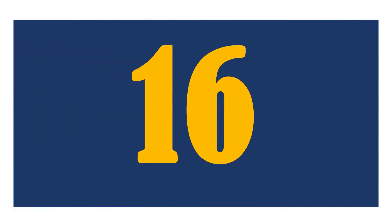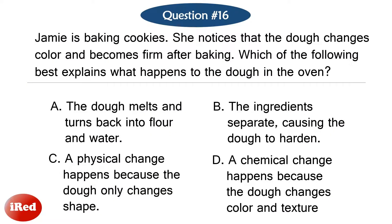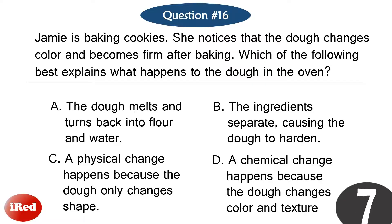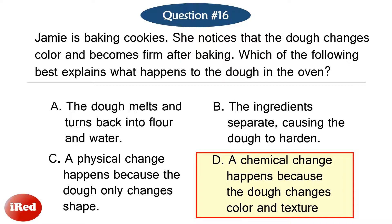Question number sixteen. Jamie is baking cookies. She notices that the dough changes color and becomes firm after baking. Which of the following best explains what happens to the dough in the oven? The correct answer is letter D, a chemical change happens because the dough changes color and texture.